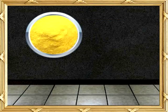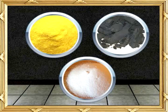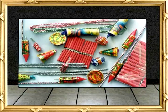A mixture of sulphur, charcoal and potassium nitrate is called gunpowder, and it is used in the manufacture of crackers and other fireworks.